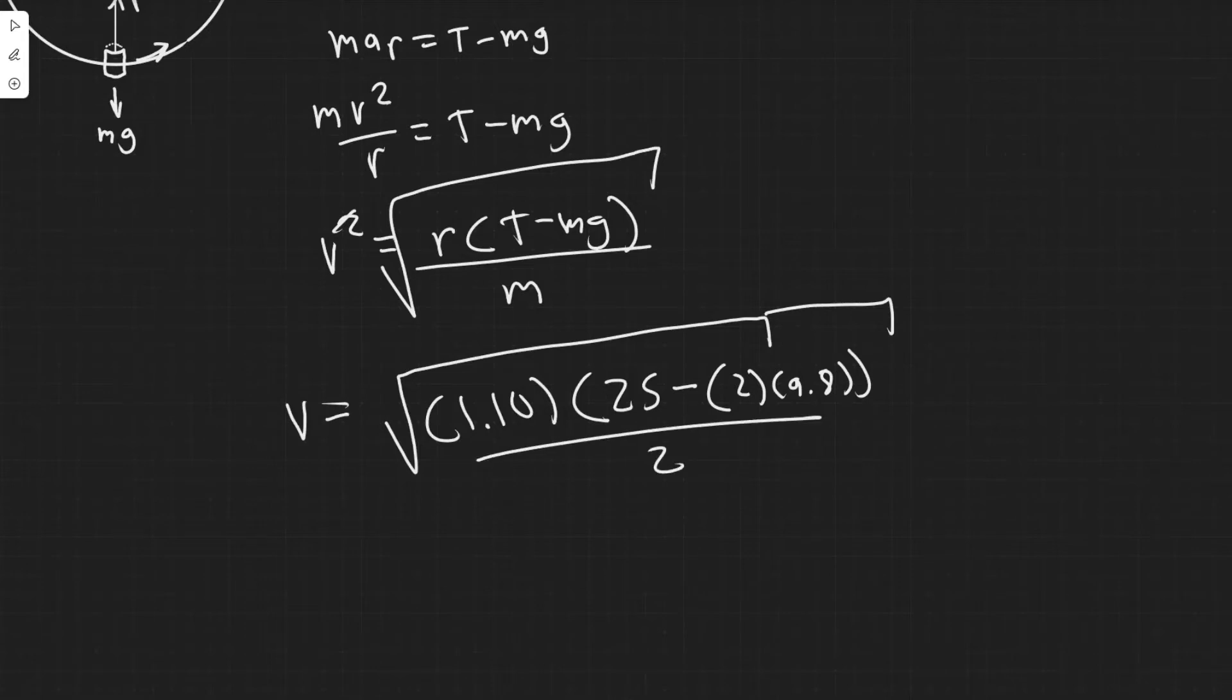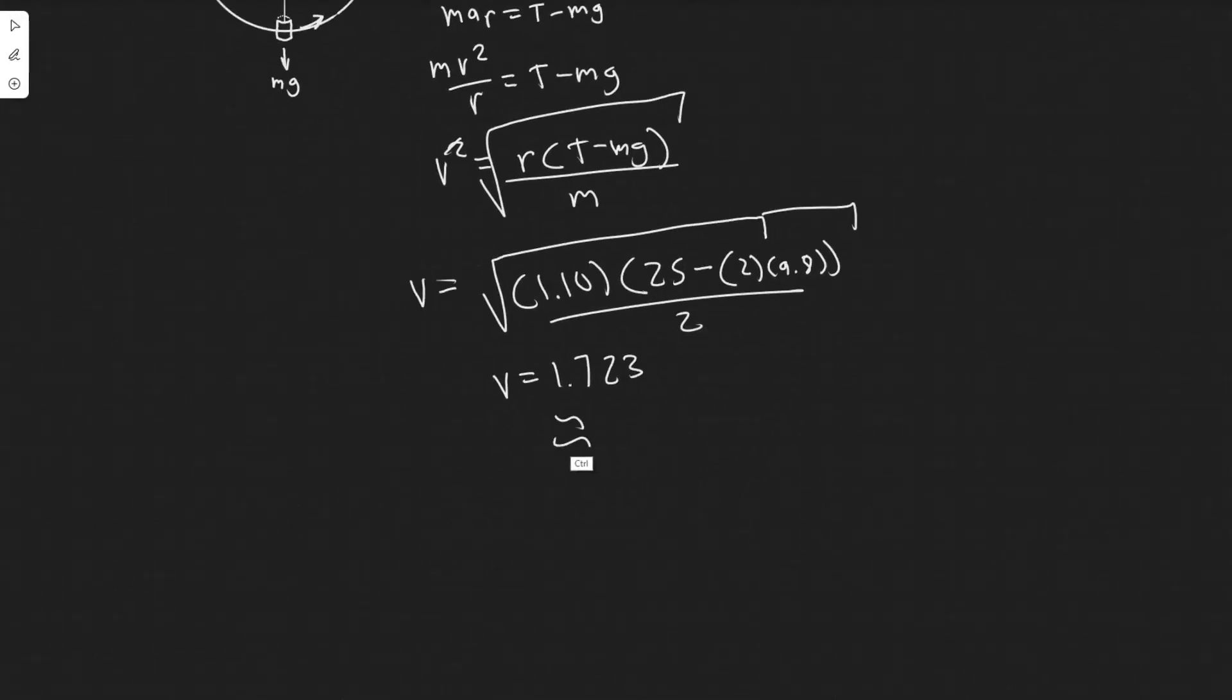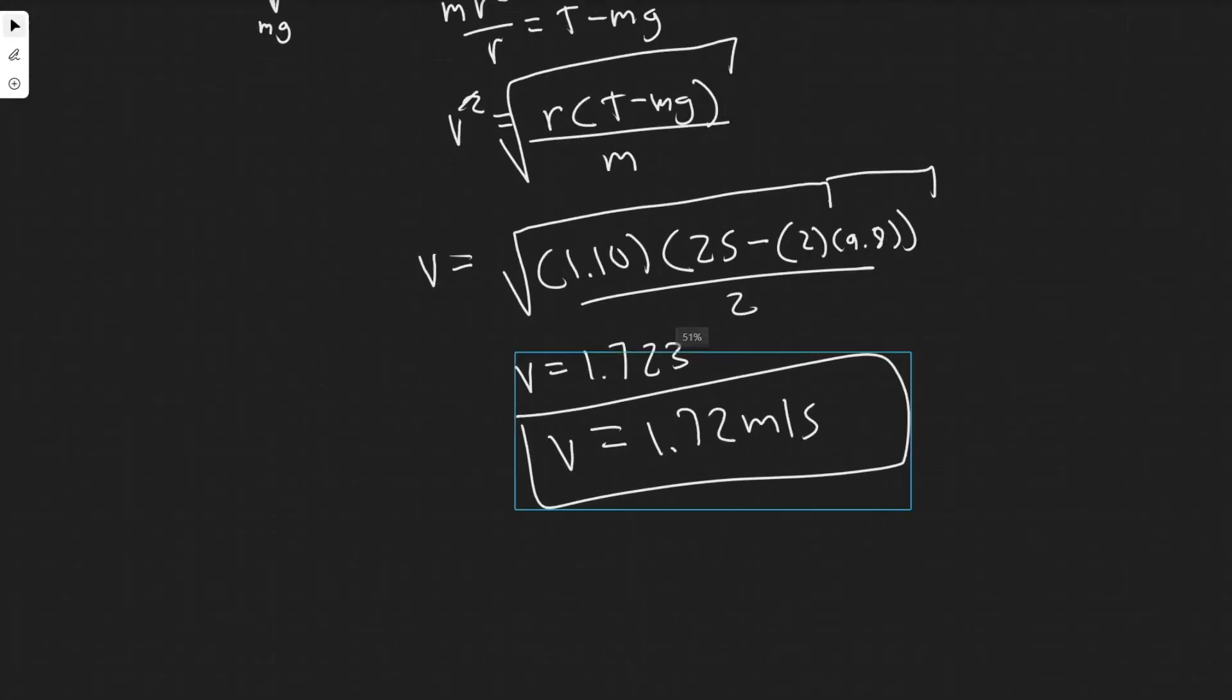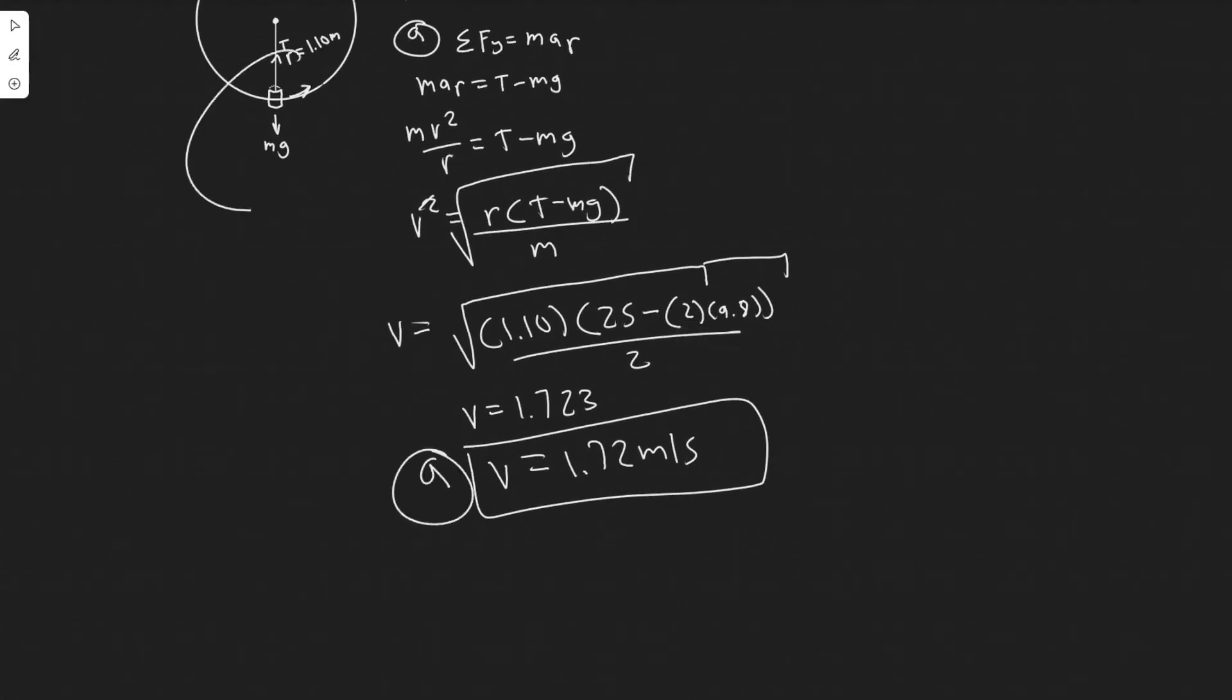Let me get up my calculator and plug this in. So 1.1 times 25 minus 2 times 9.8, dividing by 2, and then square rooting that. You'll find the velocity in this case is equal to 1.723. I'm just going to say it equals 1.72 meters per second. Since this is just the linear or tangential velocity, 1.72 meters per second is your answer to A. So the velocity at the bottom, that's what it is.